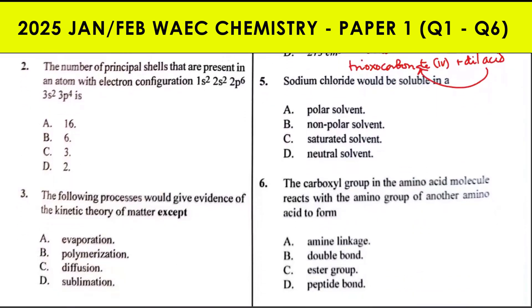Question 2: The number of principal shells that are present in an atom with electron configuration 1s² 2s² 2p⁶ 3s² 3p⁴ is what? From this electron configuration, we have 3 shells. Shell number 1 is 1s with principal quantum number 1, shell number 2 is 2s and 2p with principal quantum number 2, and shell number 3 is 3s and 3p with principal quantum number 3. So the answer is C.